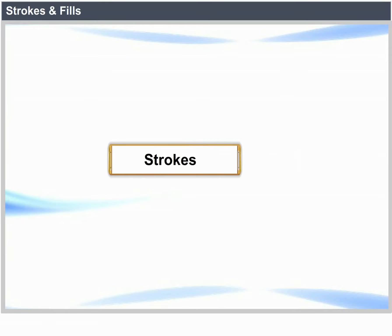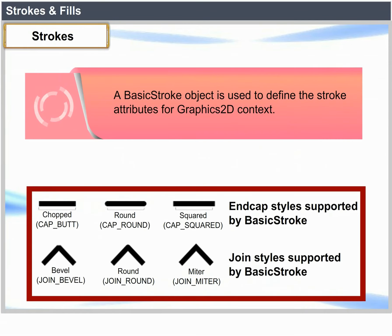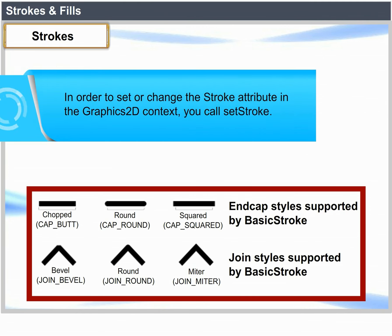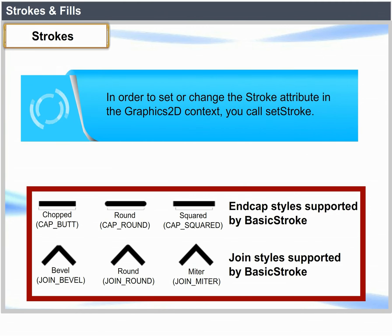Strokes and Fills — Strokes: A BasicStroke object is used to define the stroke attributes for the Graphics2D context. It defines characteristics such as line width, end cap style, segment joint style and the dashing pattern. In order to set or change the stroke attribute in the Graphics2D context, you call setStroke.